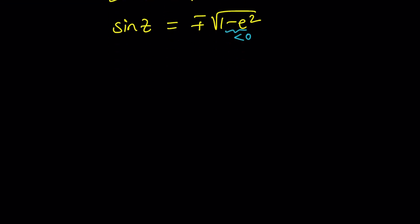So we get sine of z equals plus minus square root of e squared minus 1 multiplied by i. So we have to introduce the imaginary unit, because the square root of negative 1 is plus minus i. E squared minus 1 is positive. So this is a real number, which means this is an imaginary number. So if sine z is imaginary, can z be real? I doubt it.